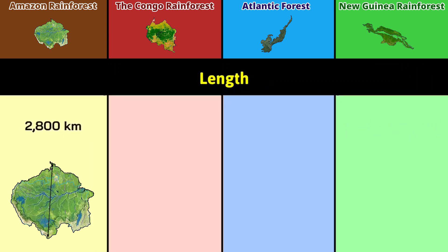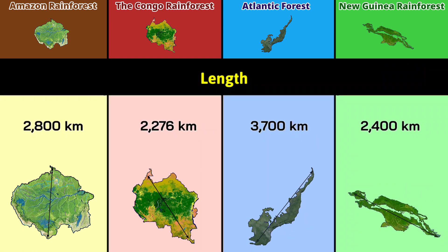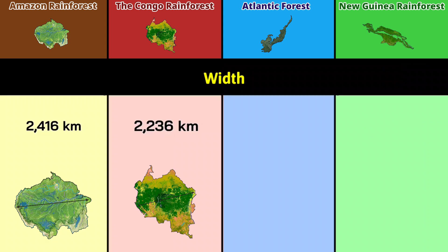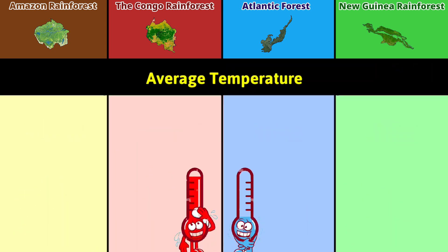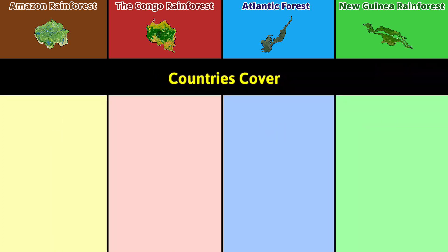Length: 2,800 kilometers, 2,276 kilometers, and 700 kilometers. Average temperature: 24 degrees Celsius, 24.6 degrees Celsius, 22 degrees Celsius, and 26 to 28 degrees Celsius.